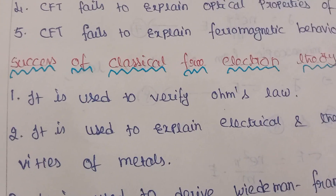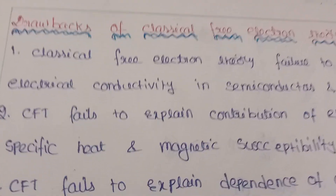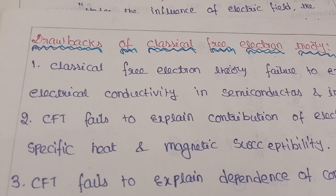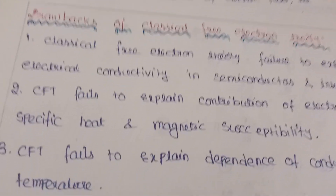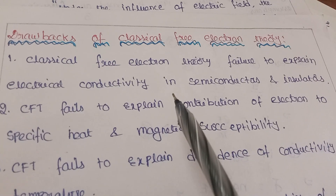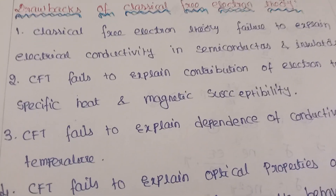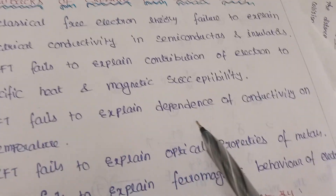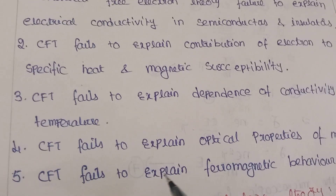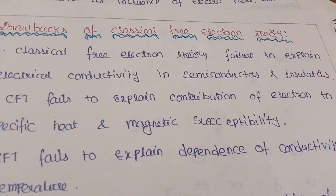The demerits (drawbacks) of classical free electron theory: it fails to explain the photoelectric effect, Compton effect, and black body radiation. It also fails to explain electrical conductivity in semiconductors and insulators, and fails to explain specific heat, magnetic susceptibility, the temperature dependence of conductivity, and electromagnetic behavior.